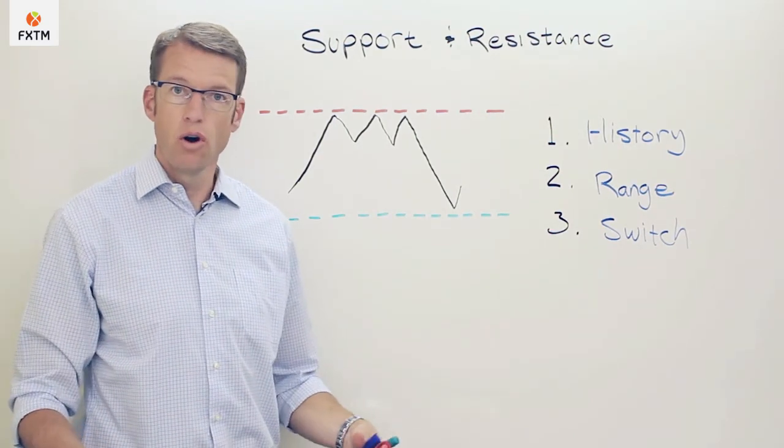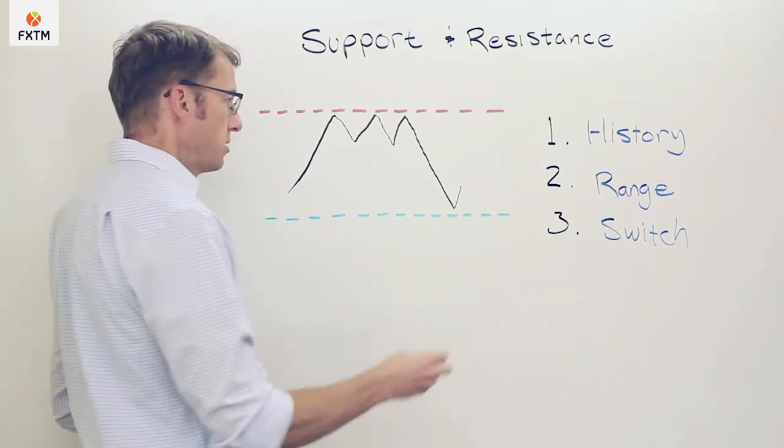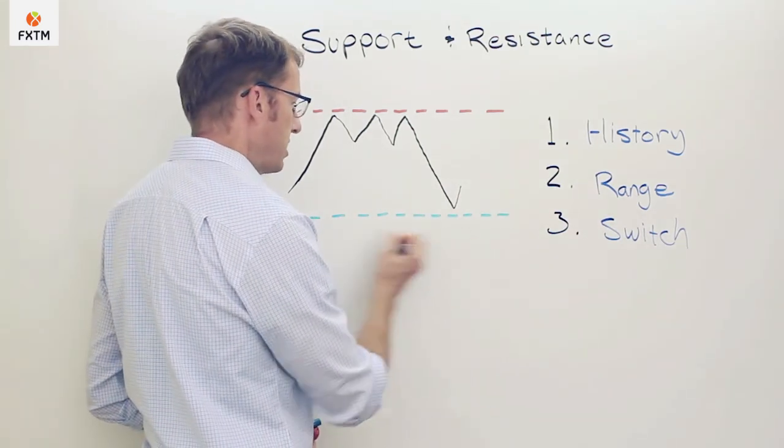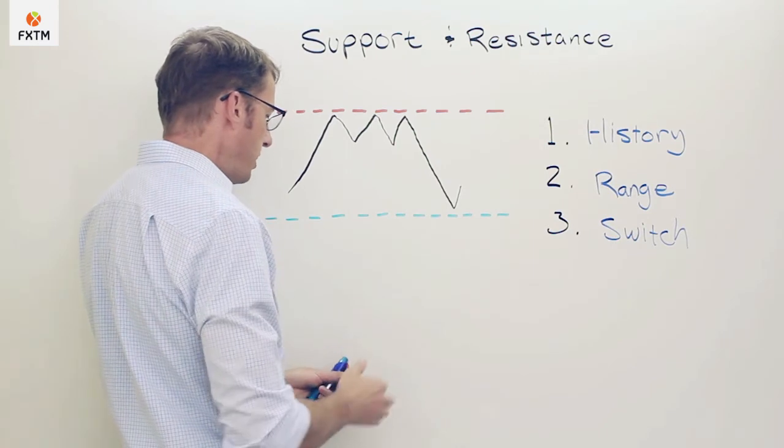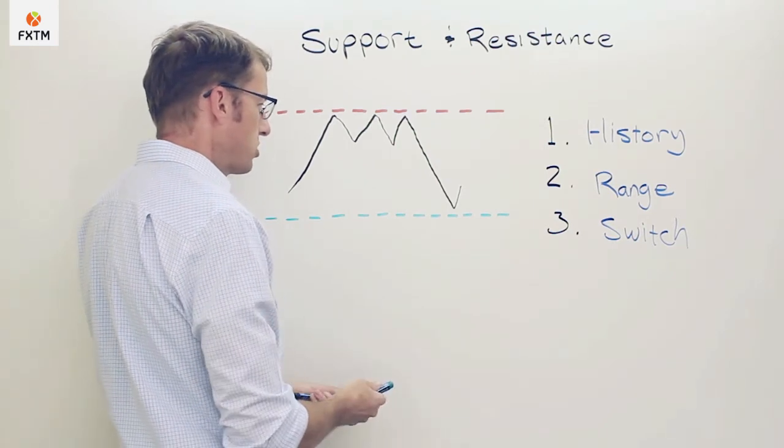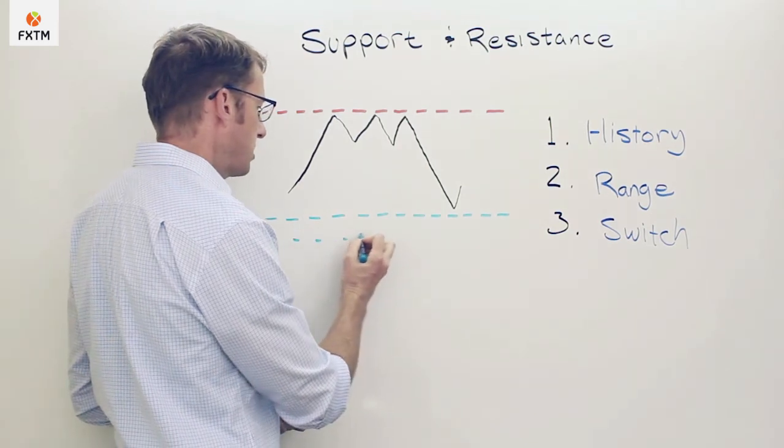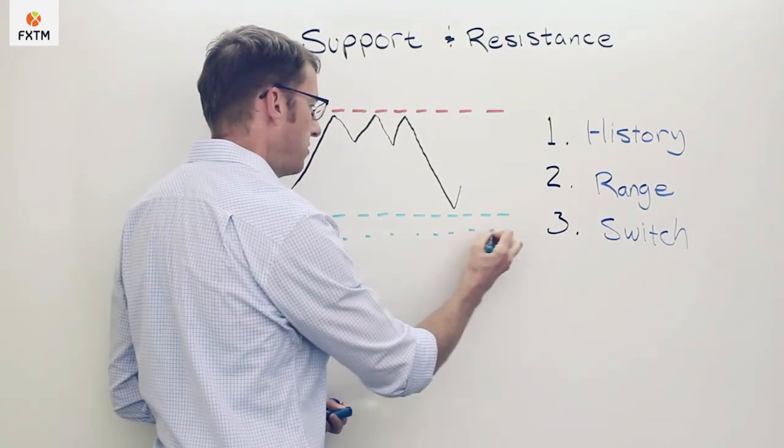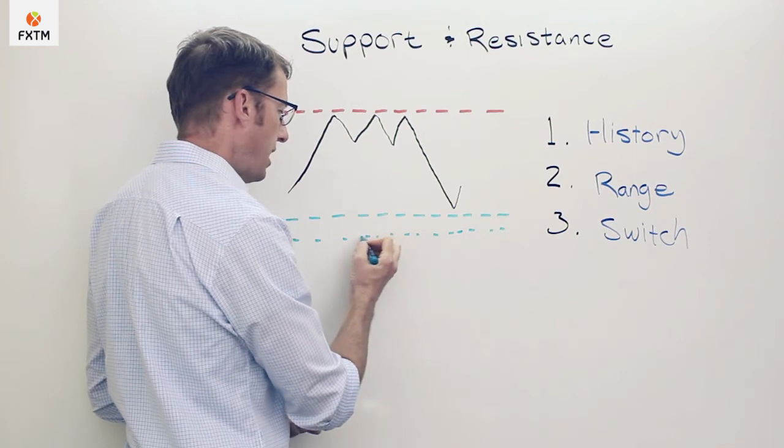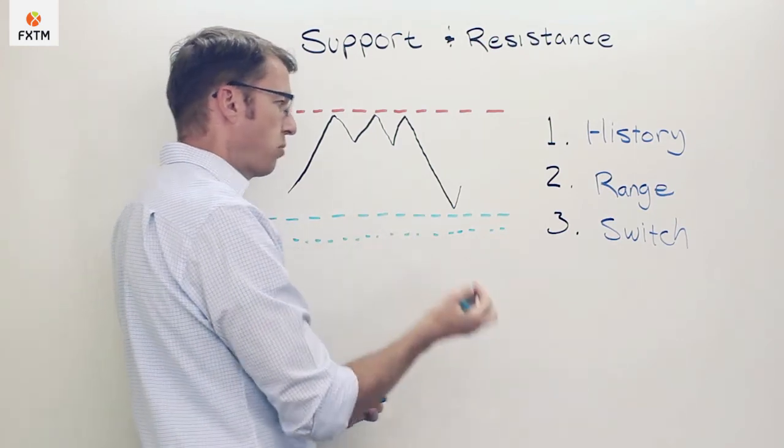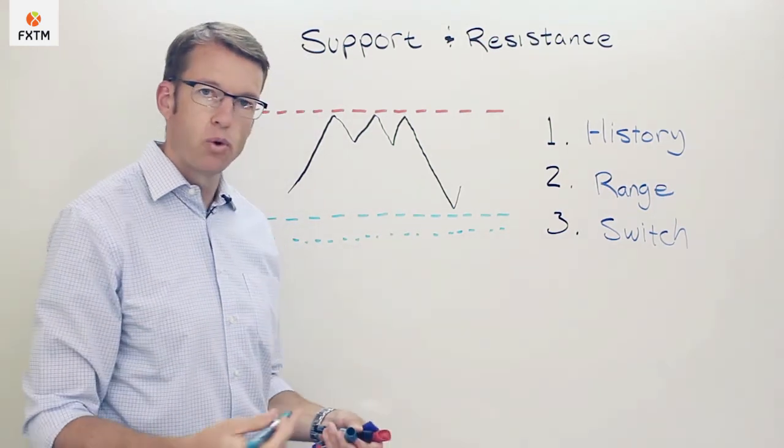Also remember that we think about support and resistance levels as being fairly wide ranges, so we don't want to just constrain ourselves to a single price point, but rather consider that we want to see definitive evidence that the price really has moved beyond a particular support level or resistance level before considering it to be invalidated.